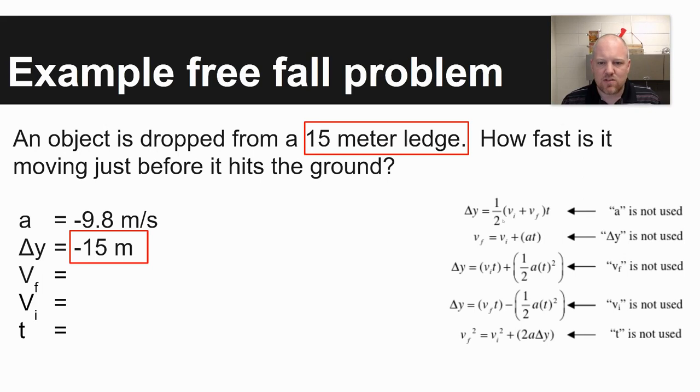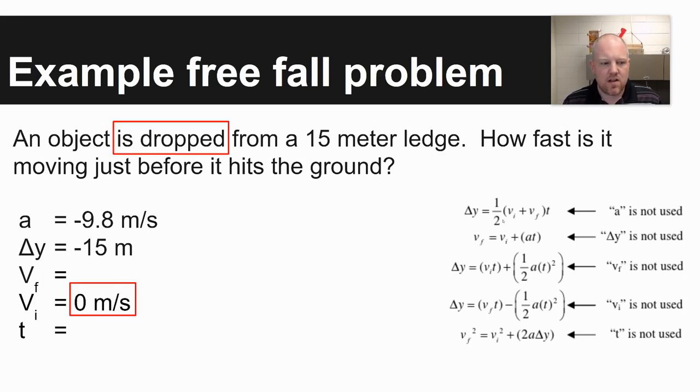15 meter ledge, so an object's being dropped off a 15 meter ledge, you start at ledge level and then it's moving down. So your displacement, your delta y, would be negative 15 meters. Your velocity initial, if an object is dropped, that means your velocity initial is zero meters per second. It doesn't say it, but it can be assumed. And then how fast is it moving just before it hits the ground? What you're asked to solve for then is velocity final.